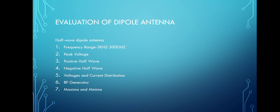The voltage and current distribution of the half-wave dipole: due to the voltage applied by an RF generator to the feed points, traveling waves and standing waves are set up along the length of the antenna. The conductors of the dipole are open-circuited at the outer ends. Standing waves are produced due to reflection taking place at the open circuits, giving rise to nodes and antinodes of voltage and current.